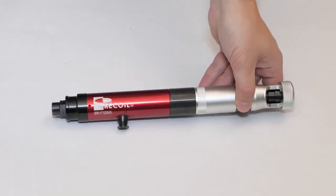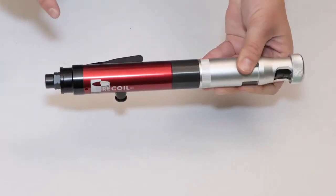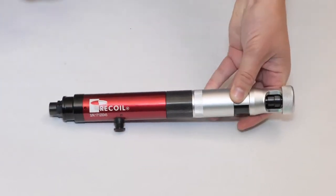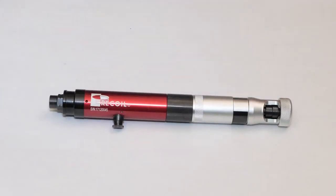On the Pneumatic Driver, there is no on or off switch. Pressing the trigger runs the tool forward, and pressing the reverse button will run the driver counterclockwise when tool is connected to air supply.